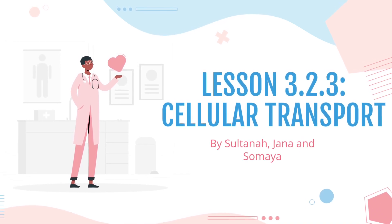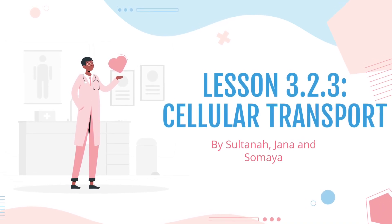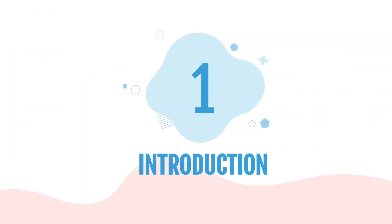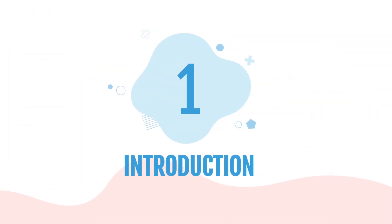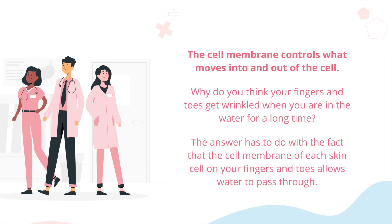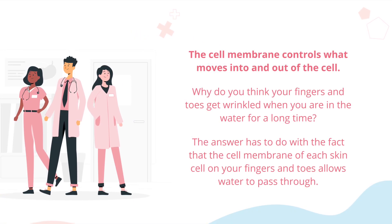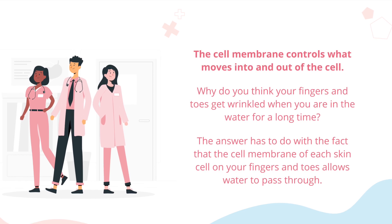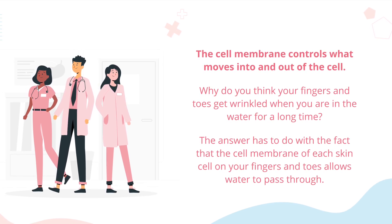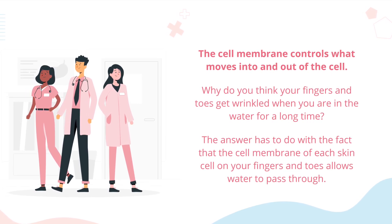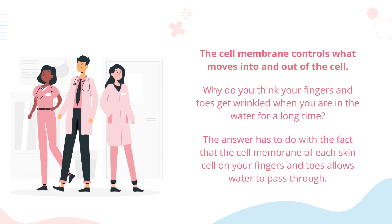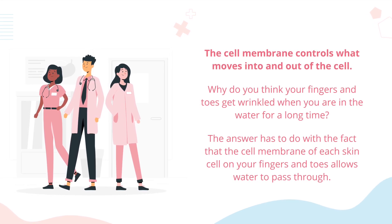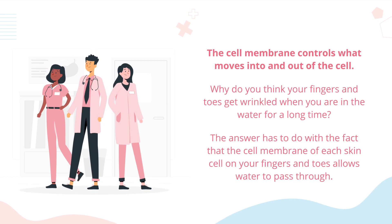Lesson 3.2.3: Cellular Transport, by Sultana, Jenner, and Soumya. The cell membrane controls what moves into and out of the cell. Why do you think your fingers and toes get wrinkled when you're in water for a long time? The answer has to do with the fact that the cell membrane of each skin cell on your fingers and toes allows water to pass through.